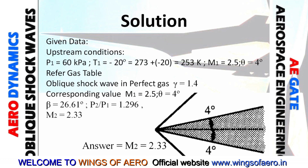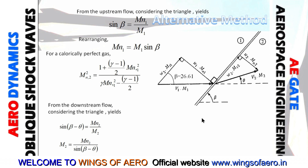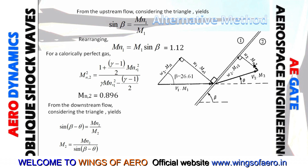Here is an alternative method. Knowing M1 and beta, substitute into the normal component equation to get MN1 equals 1.112. Then substitute MN1 into the normal shock wave formula with gamma equals 1.4 to get MN2 equals 0.896.